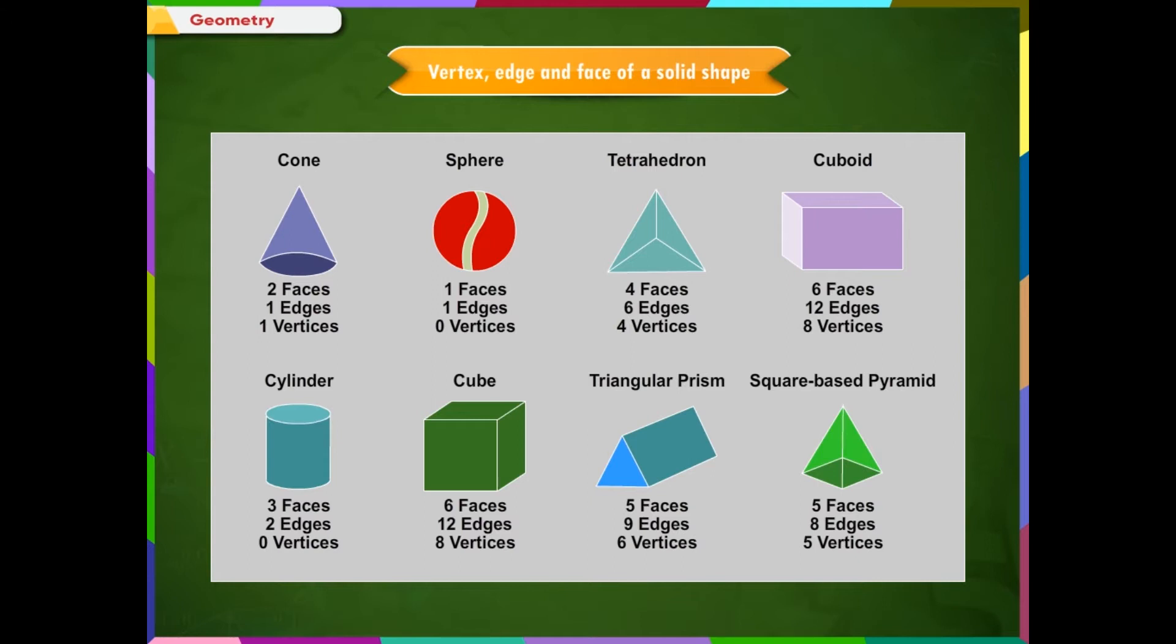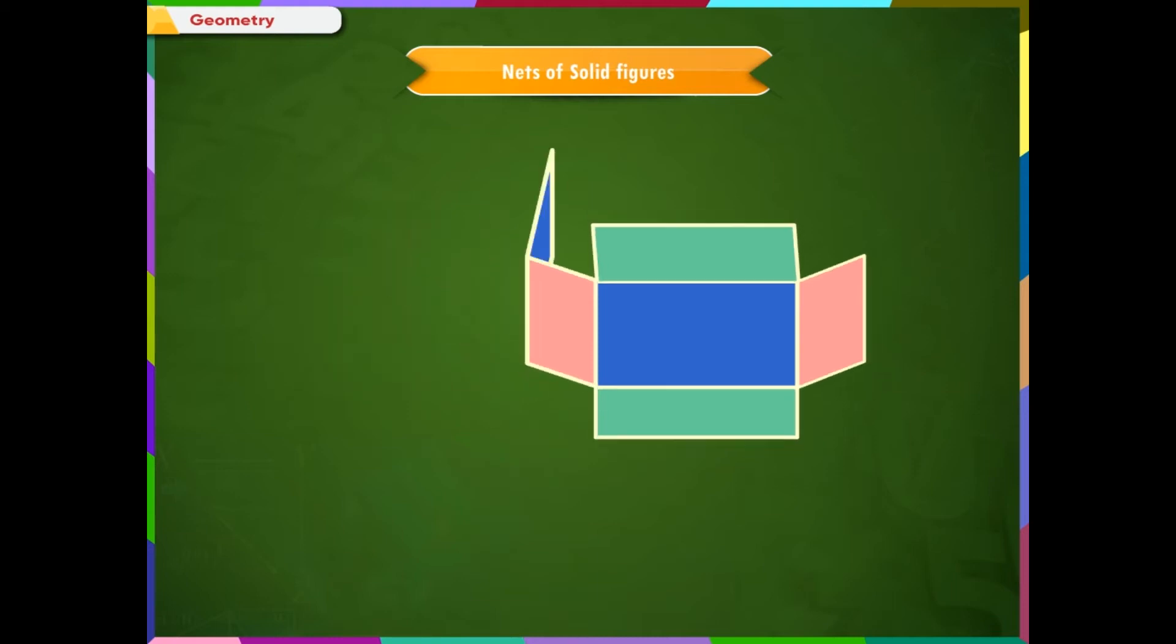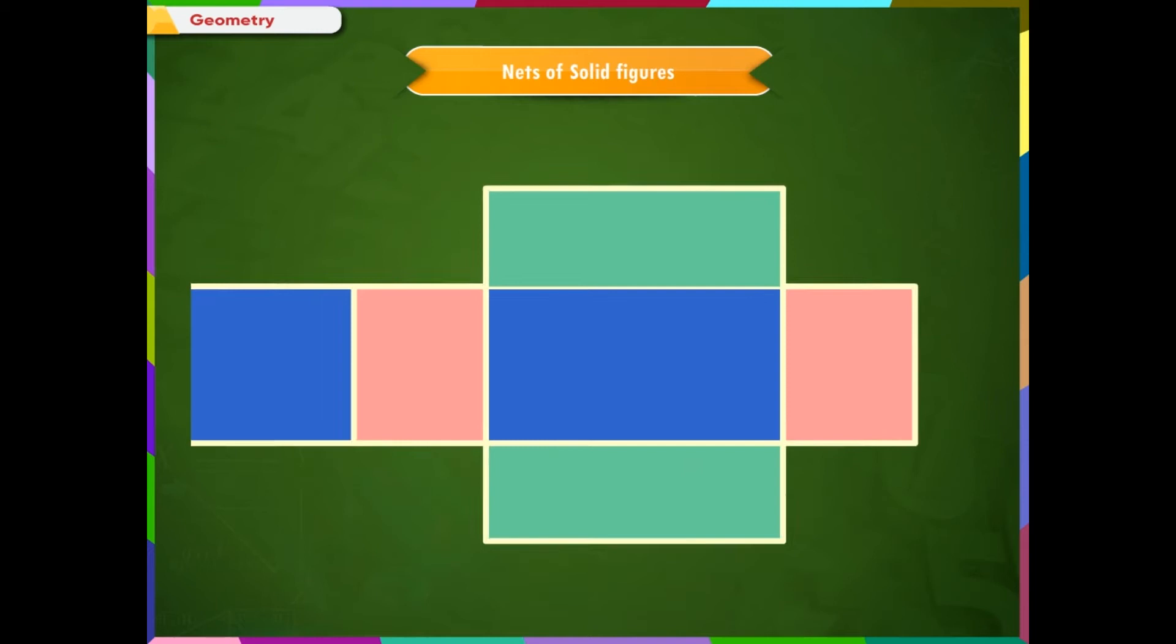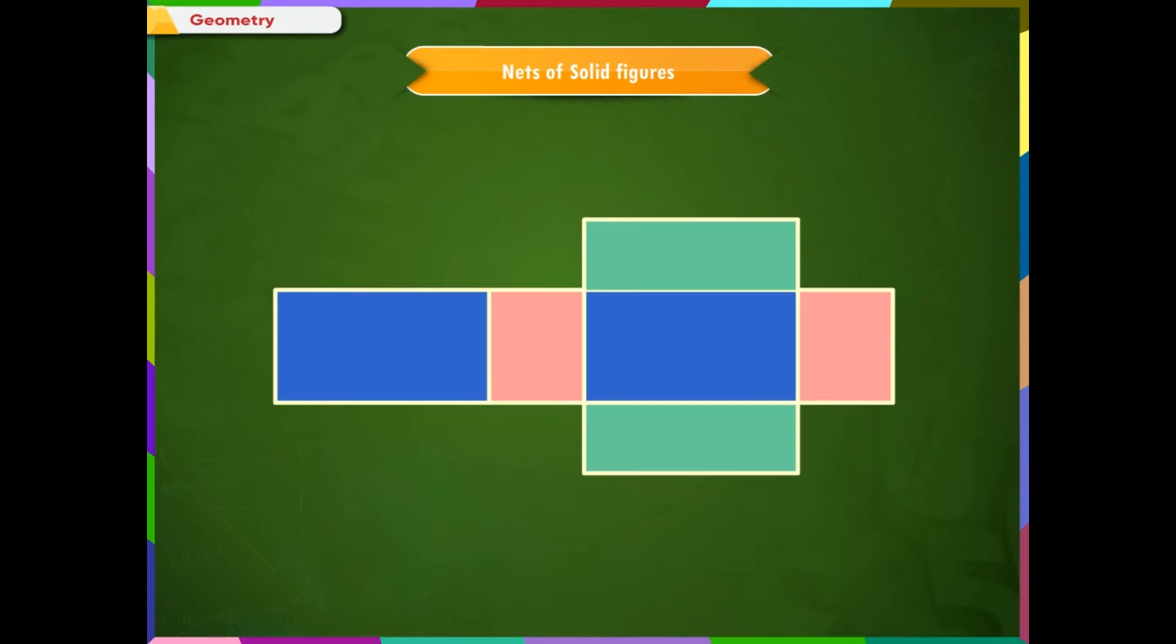Nets of Solid Figures: What is meant by the net of a solid shape? A net is a two-dimensional shape that can be folded to form a three-dimensional shape or solid. We can also say a net is a pattern made when the surface of a three-dimensional figure is laid out flat showing each face of the figure.